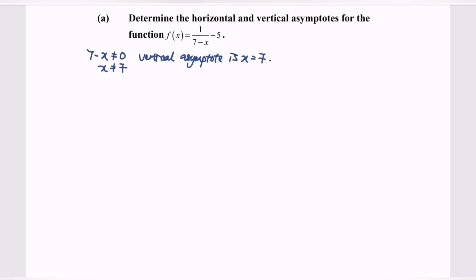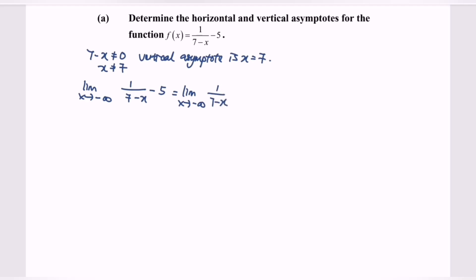For the second part, we're going to determine the horizontal asymptote. We take the limit when x is approaching negative infinity for the function 1 over (7 minus x) minus 5. So we will split this as the limit when x approaches negative infinity for 1 over (7 minus x), minus the limit when x approaches negative infinity for 5.